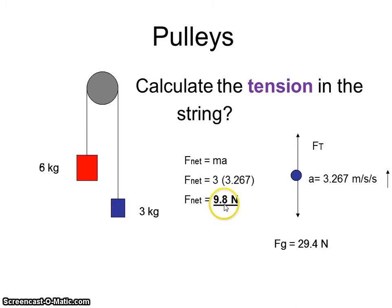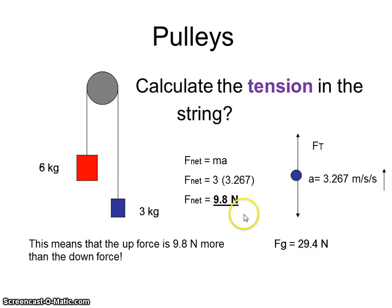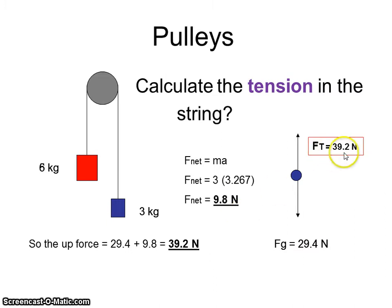Key question, what does that 9.8 represent? The difference between these two forces. Since my up force has to be more than my down force, by how much? 9.8. That means my up force, 39.2. That's the tension in the string on this side.